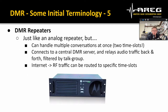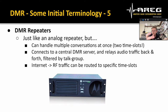DMR repeaters are just like an analog repeater with a transmit and receive frequency, but they can handle multiple conversations at once via two time slots. They connect to the central DMR server via IPSC and relay audio traffic filtered by talk group. We're running a Motorola repeater at VK5RWN. There are also homebrew options based around the MMDVM — multi-mode digital voice modem shield — which can plug into other radios to make DMR repeaters and high-powered hotspots.